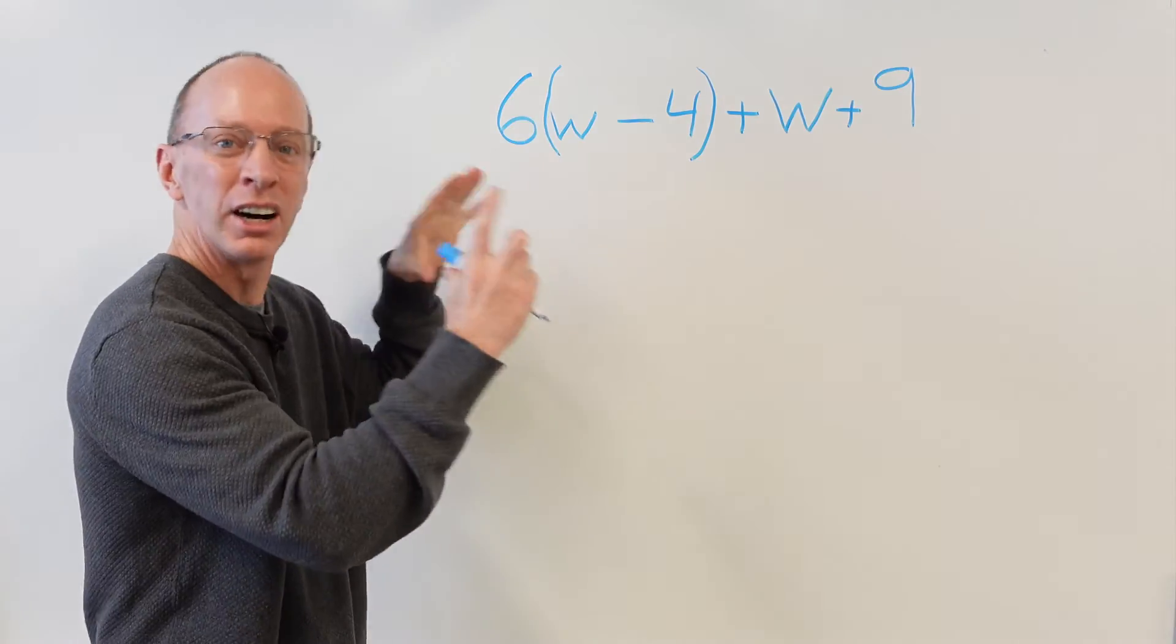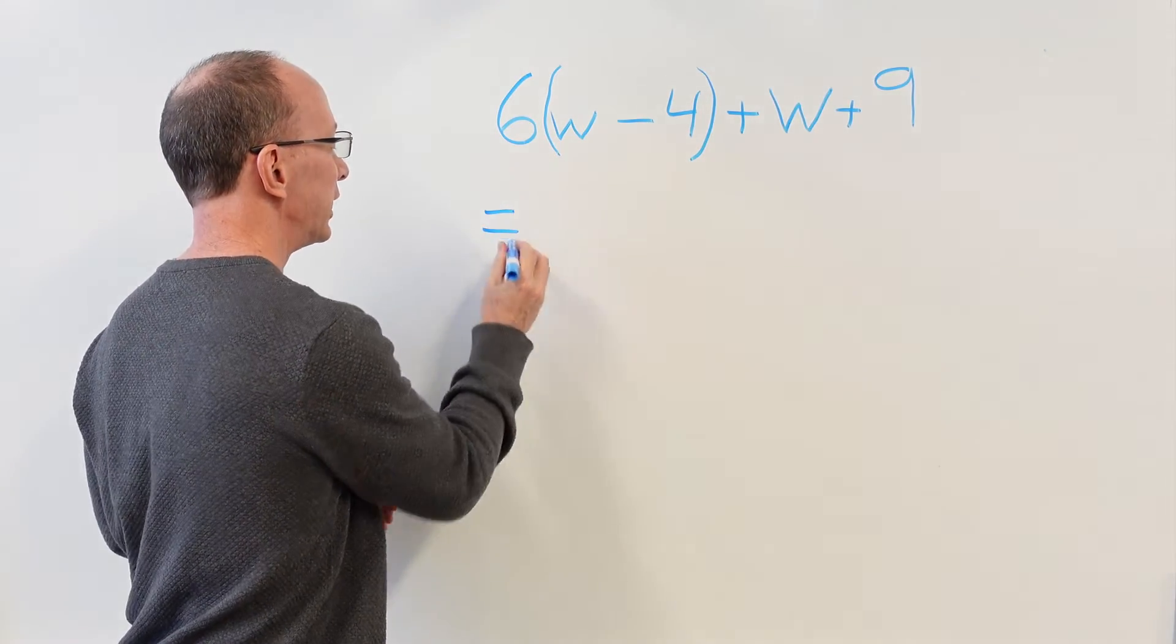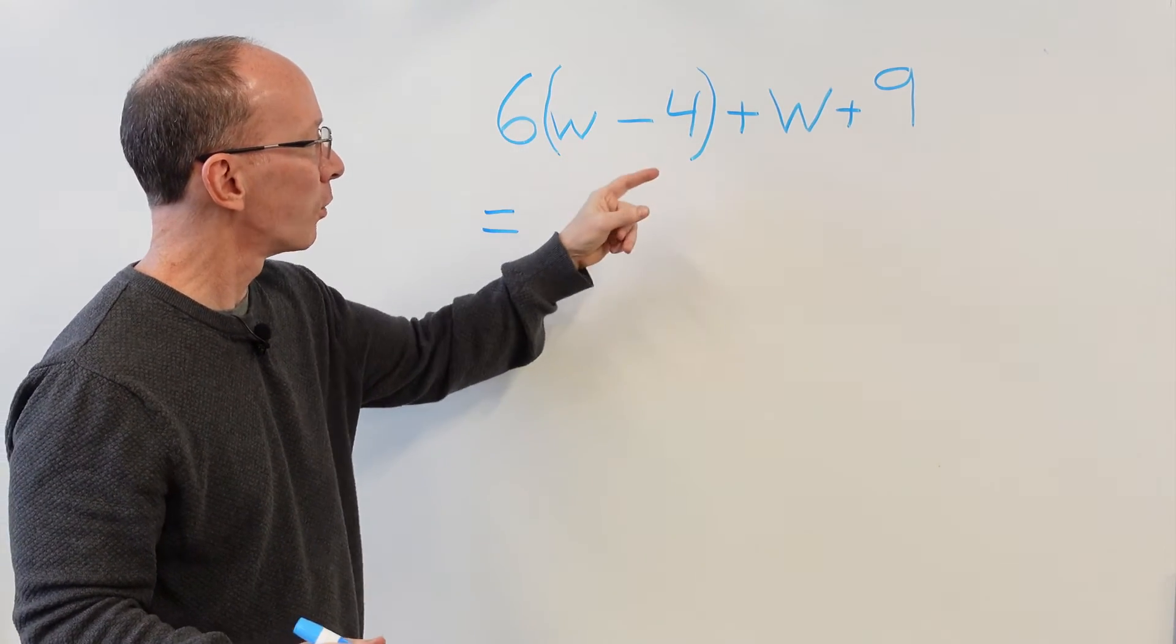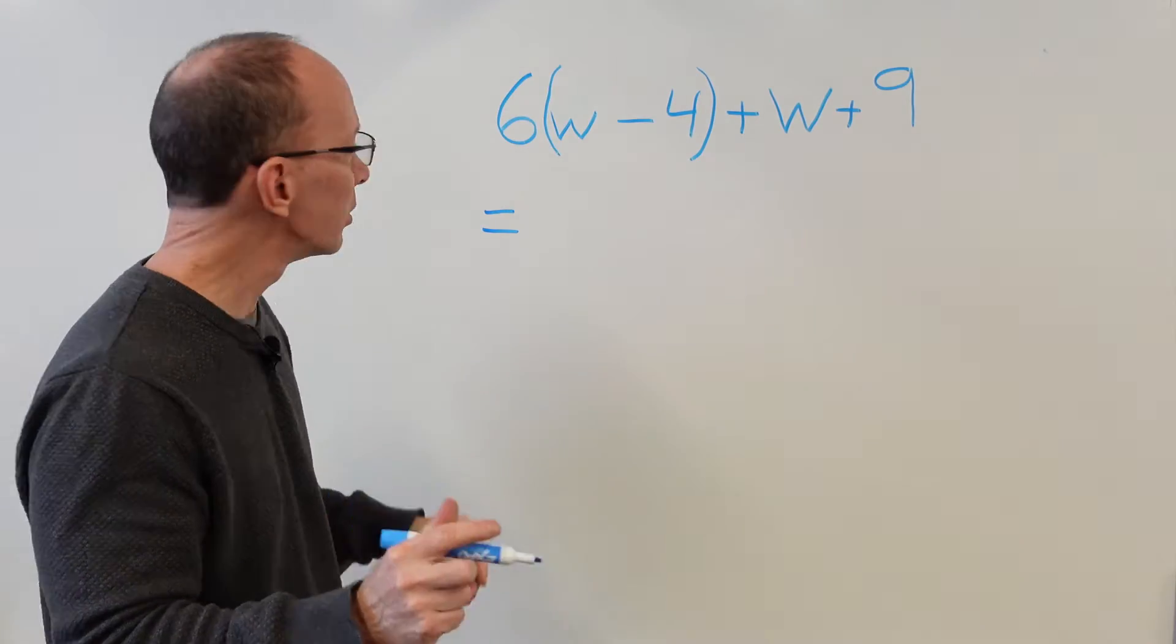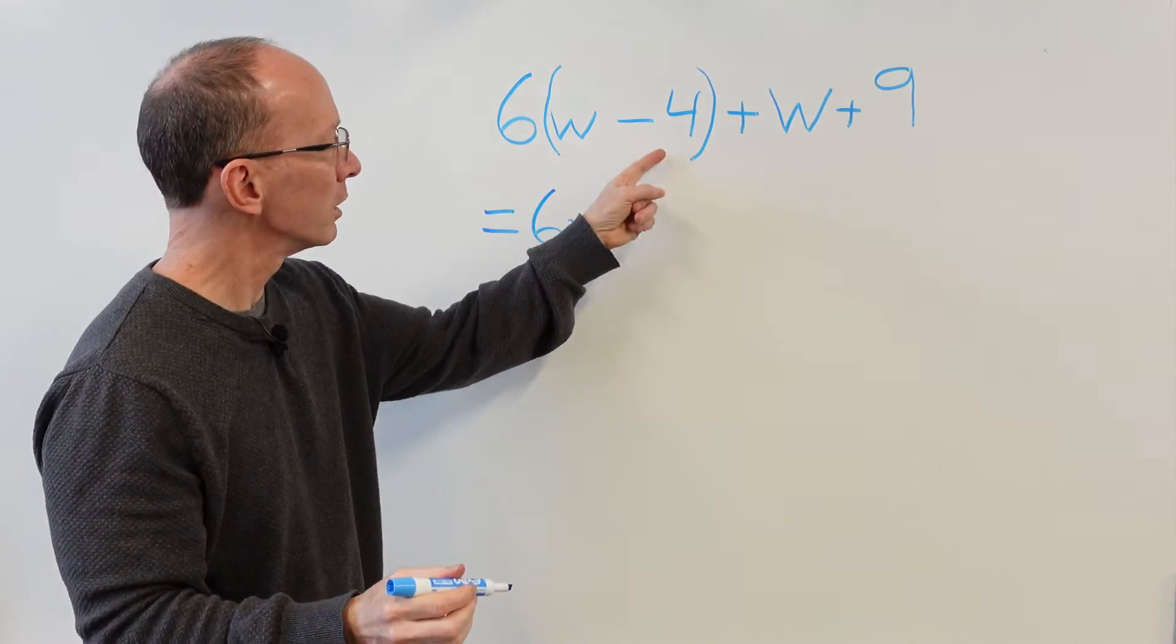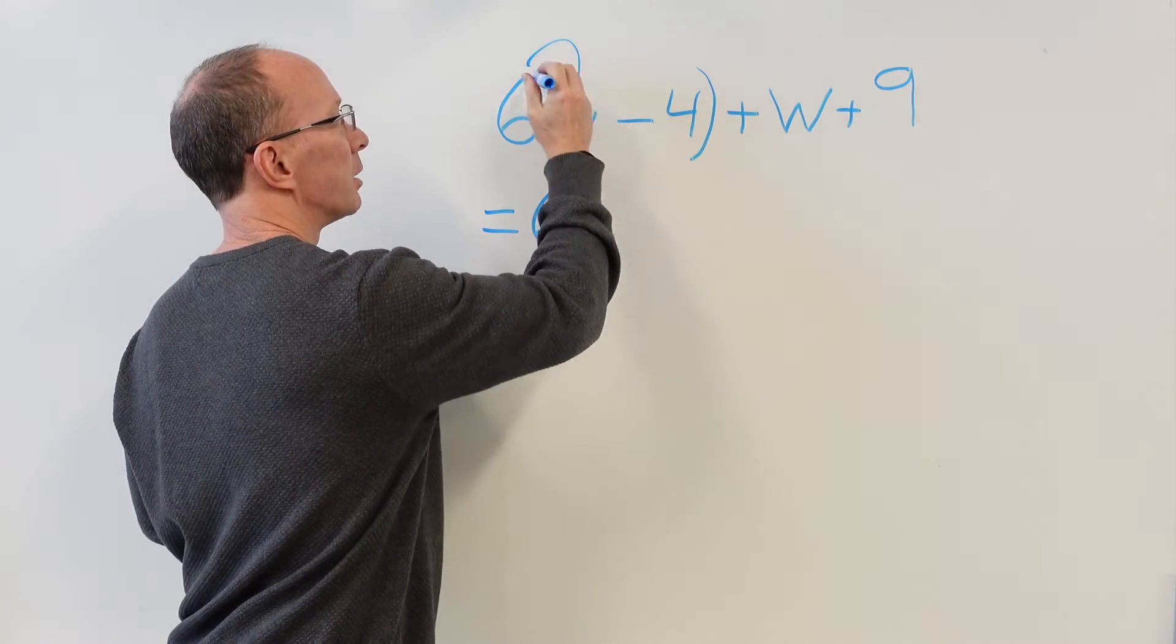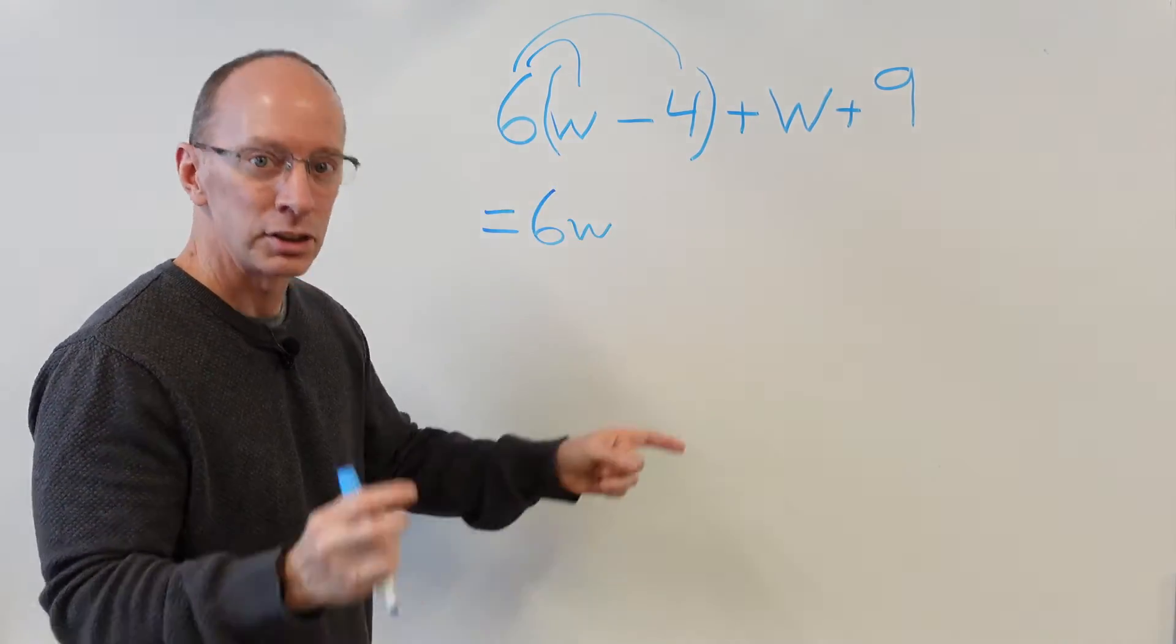We want to get rid of those parentheses, don't we? We want to simplify it. So let's turn this into a sum. 6 times w minus 4. We don't know what w is. Unknown variable. So we got 6w. 6 times 4. Remember, just to kind of refresh a little bit, we do 6 times w and then 6 times 4. So 6 times 4 is 24.